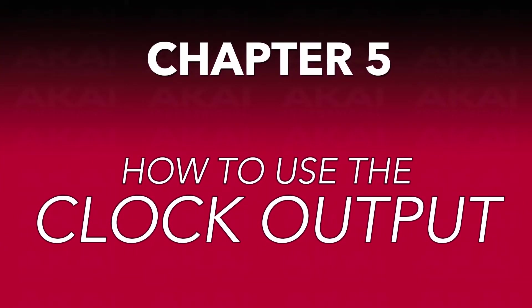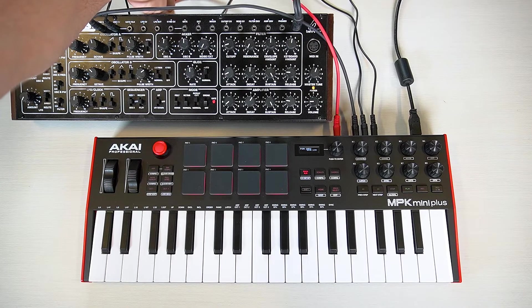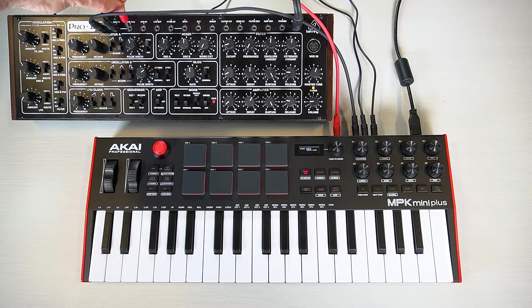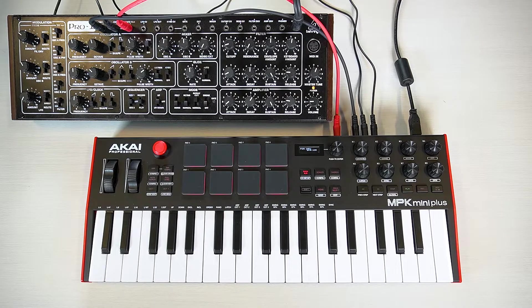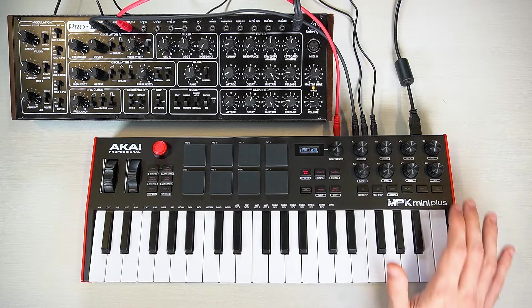Finally, let's check out the clock input and output. Plug a TS cable into the clock output and the other end into the gate or clock input on your other unit. Now, when you use the sequencer, arpeggiator, or note repeat functions, the BPM you select on the MPK Mini Plus will control the tempo of anything played through your secondary unit.